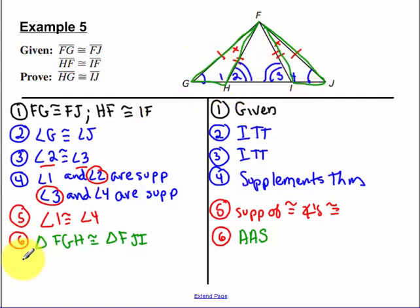Now that I have my two triangles congruent, I can say HG is congruent to IJ by CPCTC.